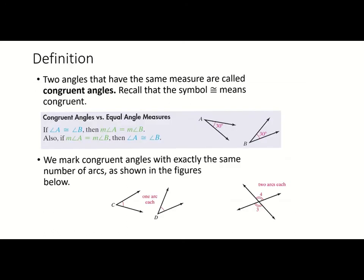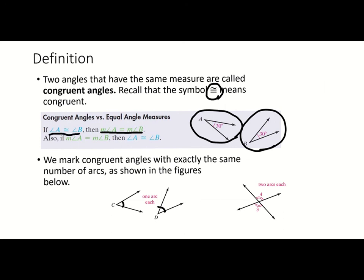Just like we talked about with segments, if we have two angles that have the same measure they are congruent, and we use the equal sign with the little wave on top. Congruent angles are marked with arcs — one arc means they're congruent, two arcs in each angle means those angles are congruent to each other. If we know a number measurement, we write the measure of angle A equals the measure of angle B with a lowercase m. If we just know they're congruent from arc marks, we write angle A is congruent to angle B.